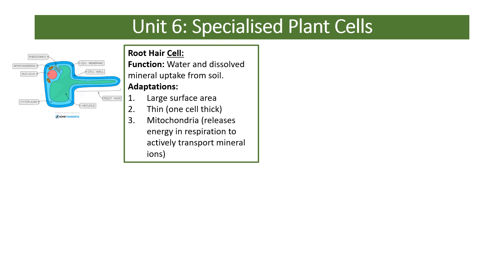Some cells have differentiated and adapted to carry out a particular function. The first type of specialized plant cell you should be aware of is the root hair cell, whose function is to absorb water and dissolved minerals from the soil. Its adaptations include a large surface area due to its particular shape, which increases the amount of molecules that can diffuse in via osmosis or active transport.